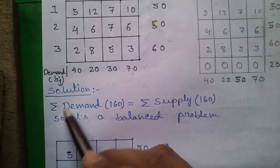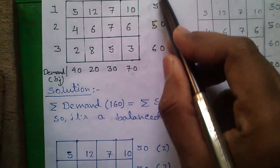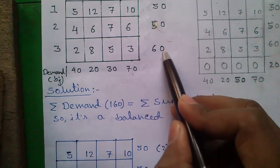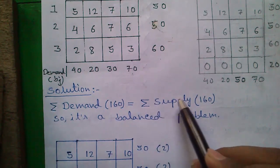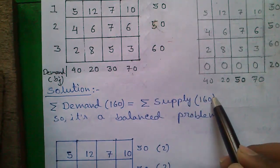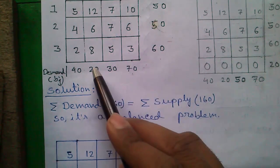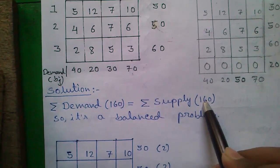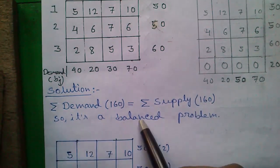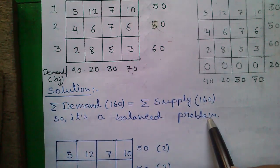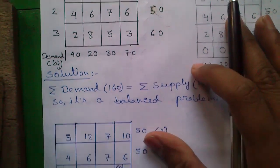First step: sum all demand values and all supply values, and check whether the sum of demand equals the sum of supply. In this question, the sum of demand is 160 and the sum of supply is also 160, so it's a balanced problem. If they are not equal, there's a special case which we will discuss later.